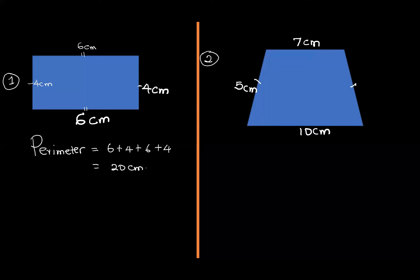For this figure, this is a trapezium — you can also call it a trapezoid. Now this side is equal to this side. So if you have five centimeters, this will also be five centimeters. Its perimeter will be 10 plus 5 plus 5 plus 7.